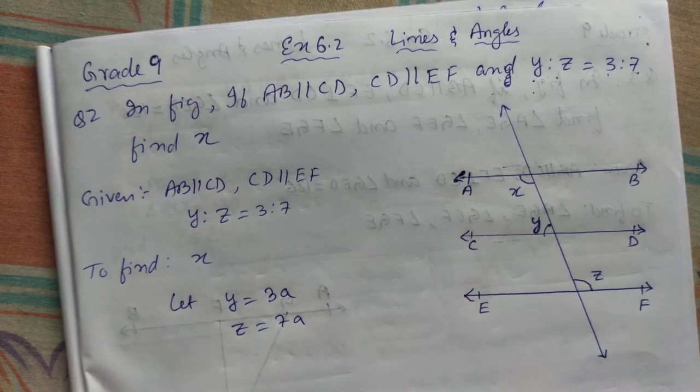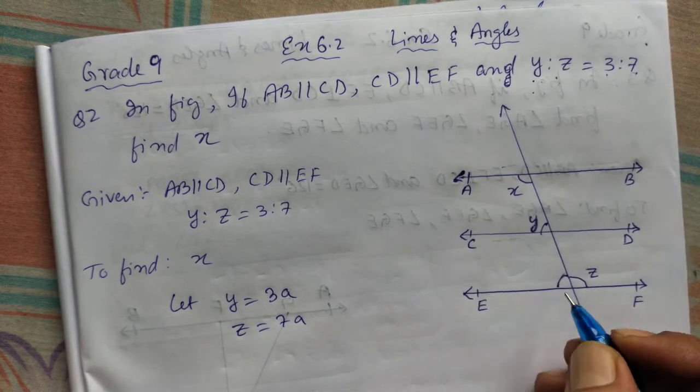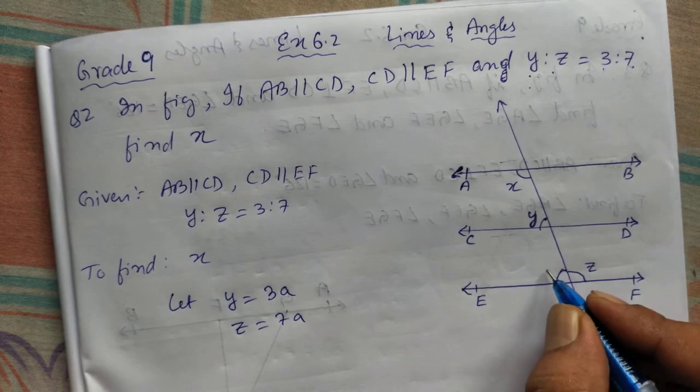And z equal to 7a. Now make one angle here. They have not given. Just make it one angle. Mark it here, w.